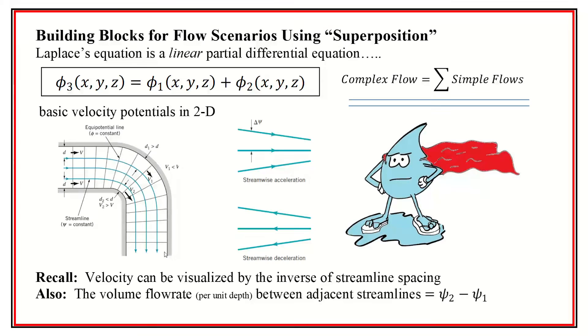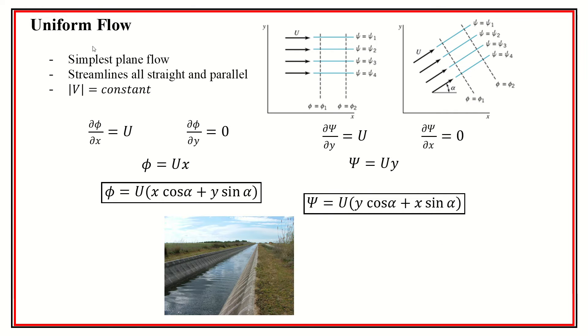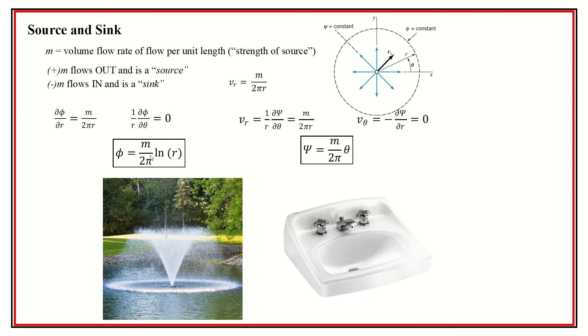So here are the building blocks. The first one is uniform flow. Just kind of makes sense. Where you're going to have a flow that's just straight and going along. It might even be at a diagonal, which is what we're showing here in terms of trying to get the coordinates going on. So we just have capital U being the far field velocity. And we could just take this. And so that's a building block.